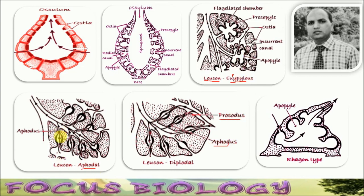In the aphodal type: this is the flagellated chamber and this one is the radial canal. This is the apopyle; here the apopyle transforms into a narrow canal called aphodus, but flagellated cells are confined only to this rounded or oval chamber. In diplodal type, there are two narrow canals. This one is called prosodus — the incurrent canal opens into the flagellated chambers through prosodus — and this flagellated chamber opens into the radial canal through aphodus.